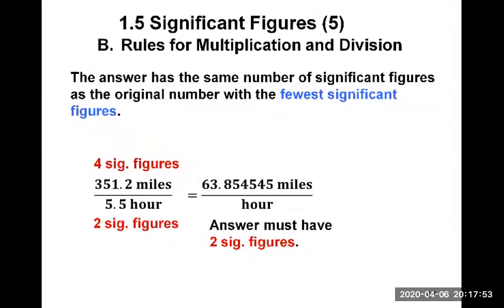This video will cover section 1.5 parts B and C, and section 1.6 on scientific notation. Let's start with rules for multiplication and division when you are multiplying and dividing numbers that have significant figures that matter. The rule says that the answer has the same number of significant figures as the original number with the fewest number of significant figures.